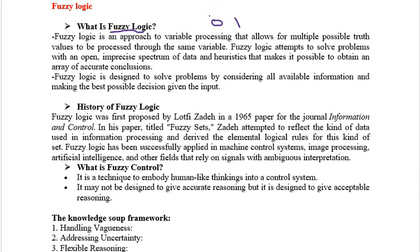Now let's understand a small history of fuzzy logic. Fuzzy logic was first proposed by Lotfi Zadeh in a 1965 paper titled 'Information and Control.' You have to remember these names for the exam. The title of the concept introduced in this paper is 'fuzzy sets.' Remember this keyword. It attempted to reflect the kind of data used in information processing.